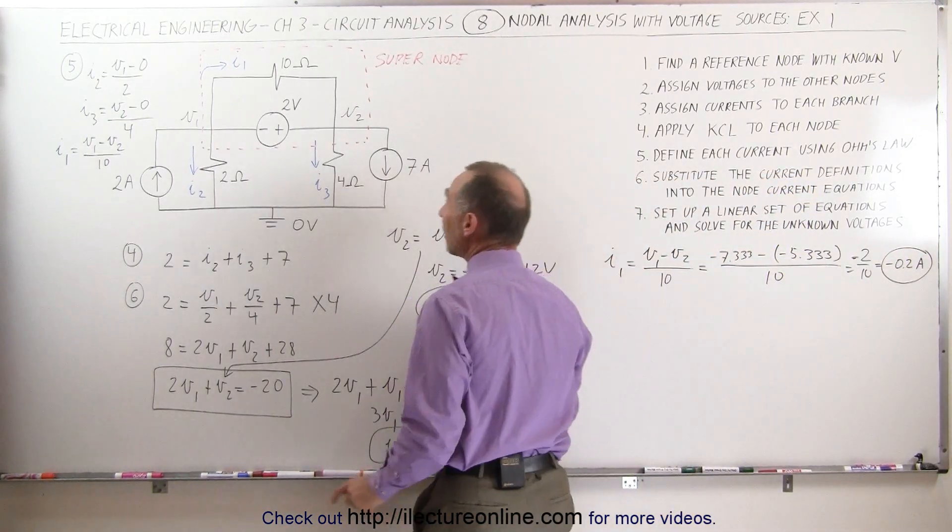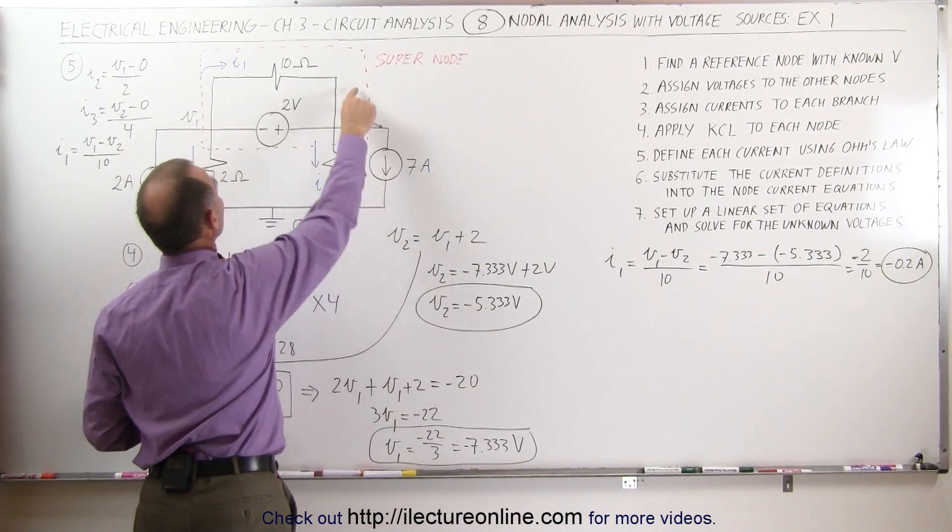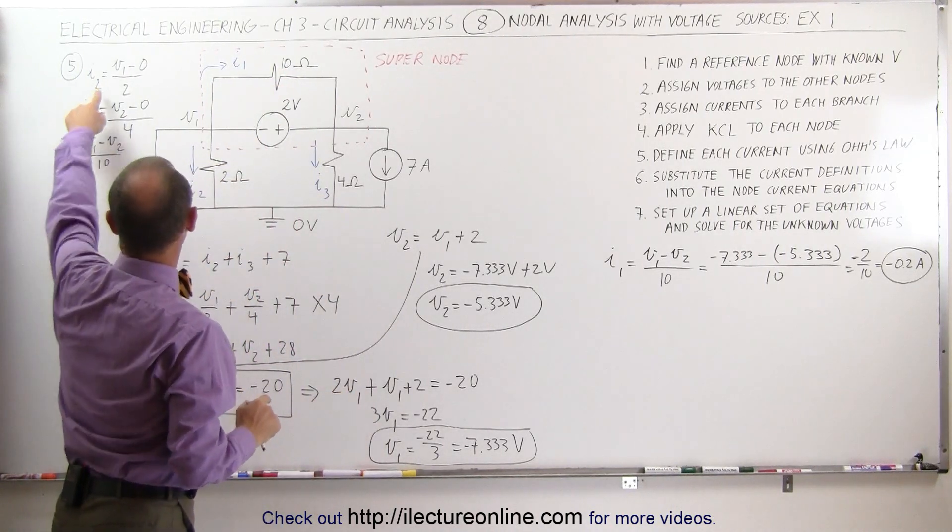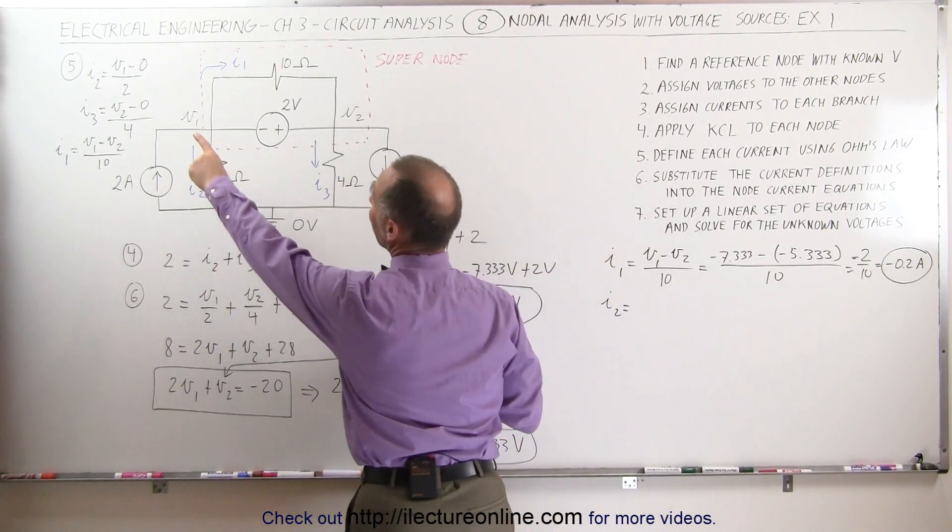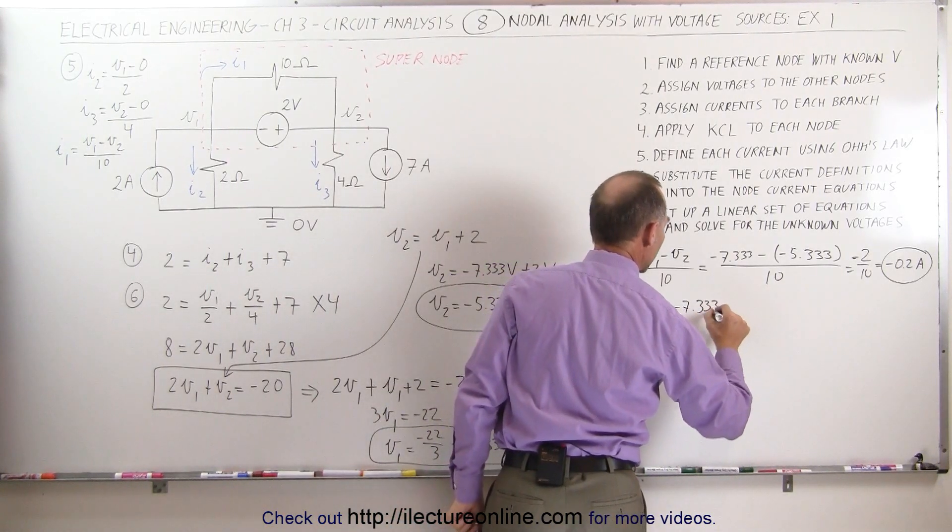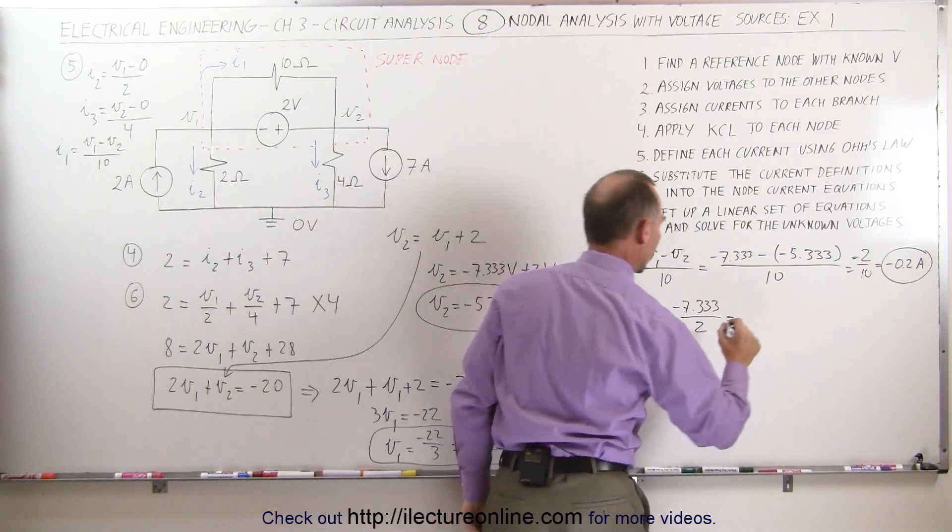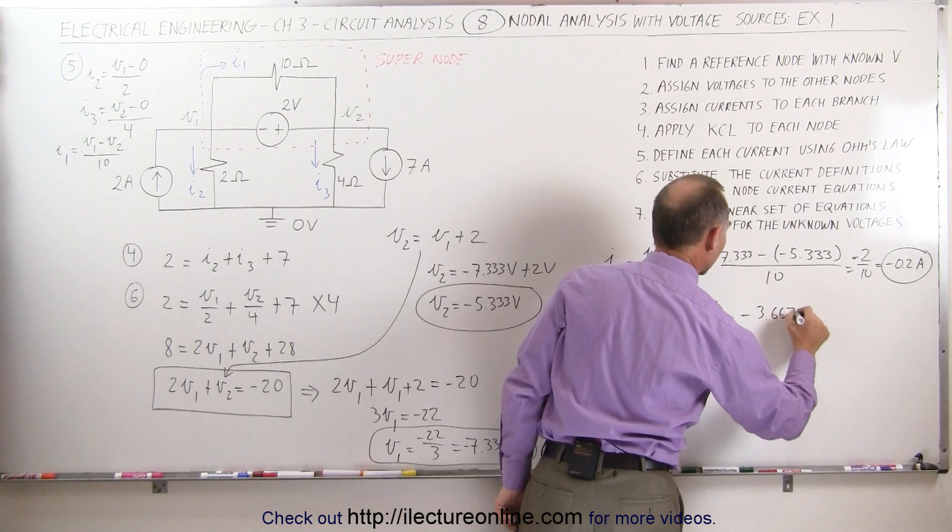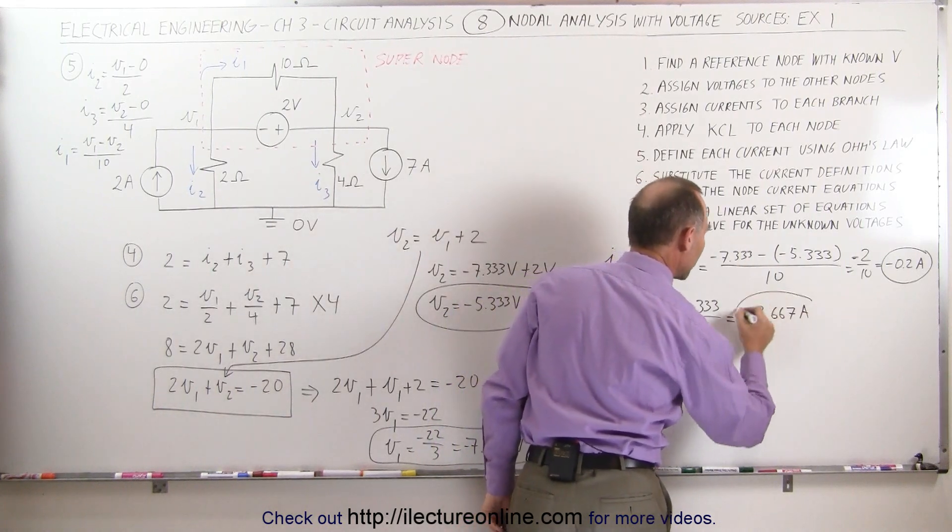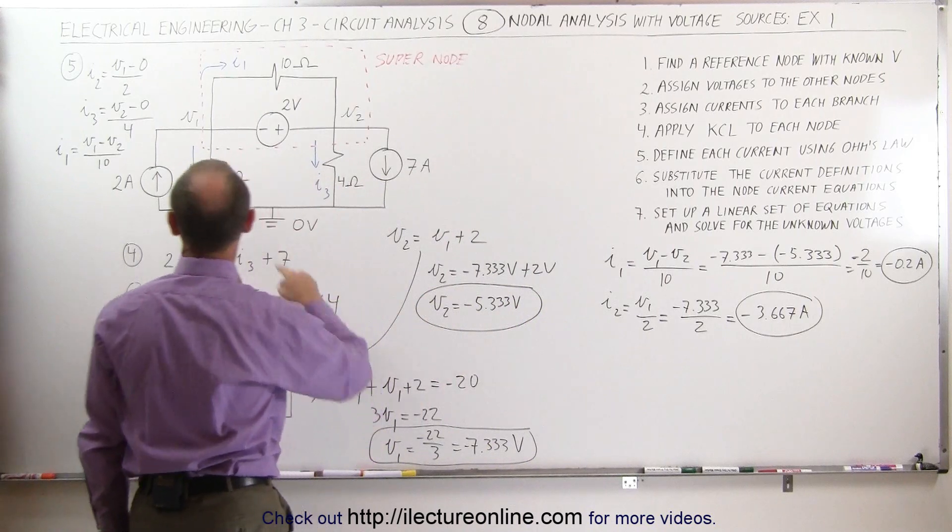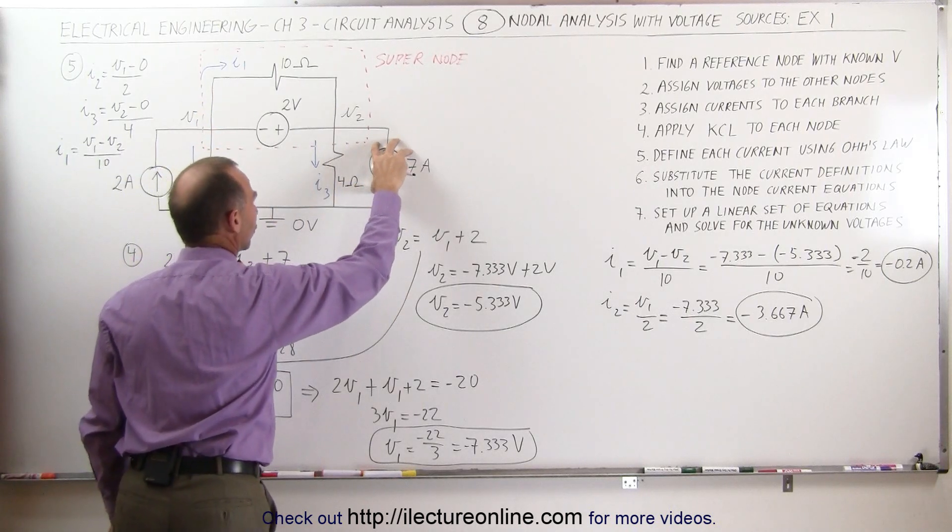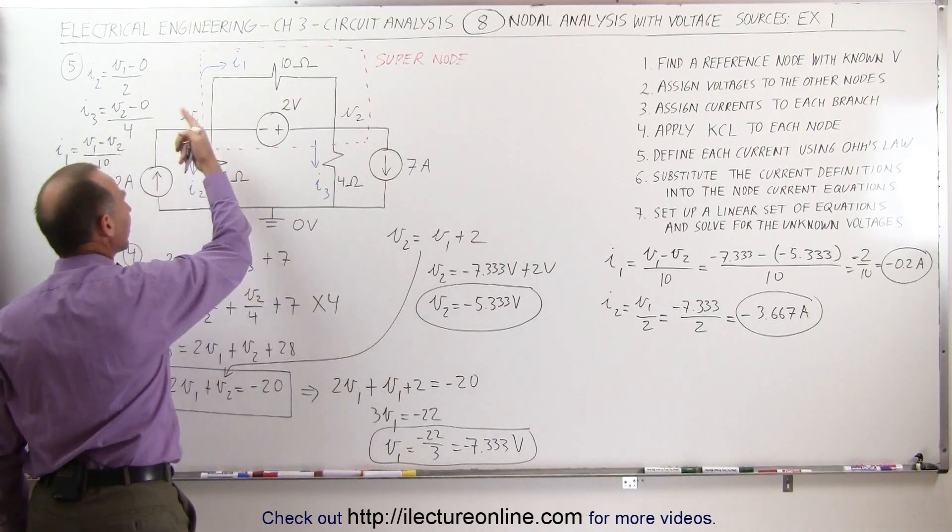Minus would indicate that that's in the opposite direction than was drawn. So we actually have current flowing from right to left through the 10 ohm resistor instead of from left to right. The second current can be found, I2, by taking V1 divided by 2. V1 is minus 7.333 divided by 2, which would be equal to minus 3.667 amps. And so this would be the current I2, it's a negative current, so instead of the current flowing in this direction, the current actually flows in this direction. I bet that this stronger current source compared to this one caused the current to flow in this direction.